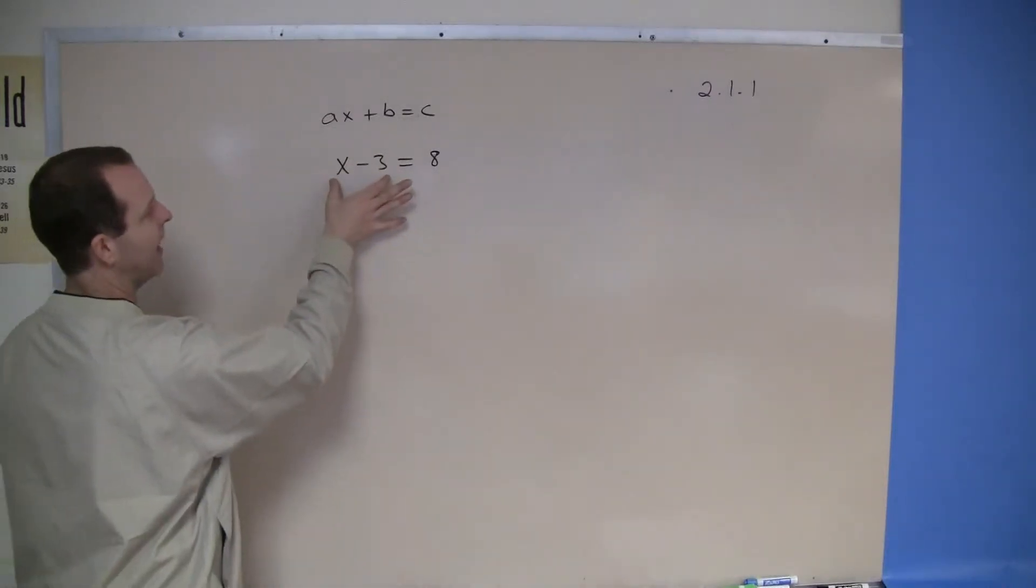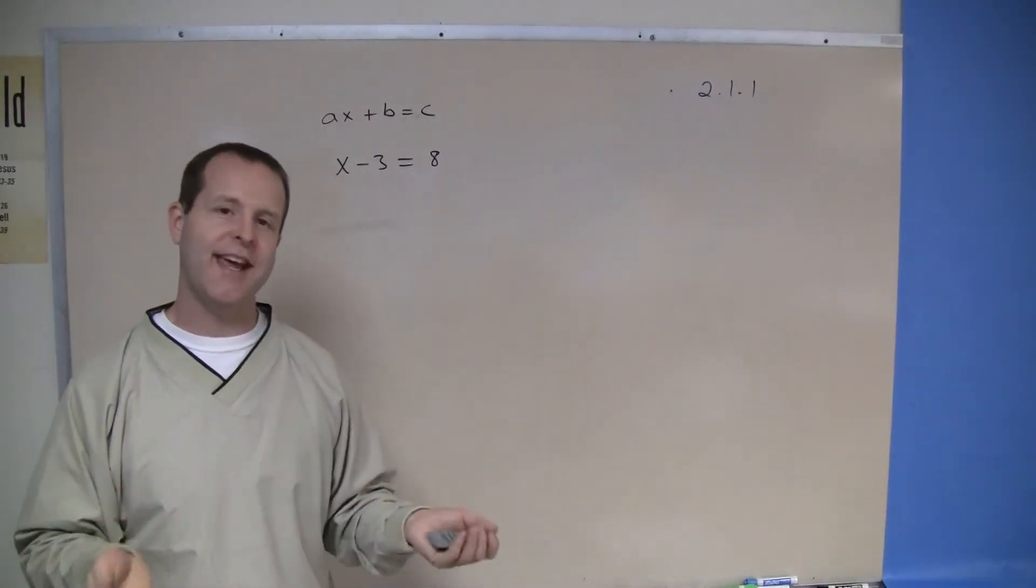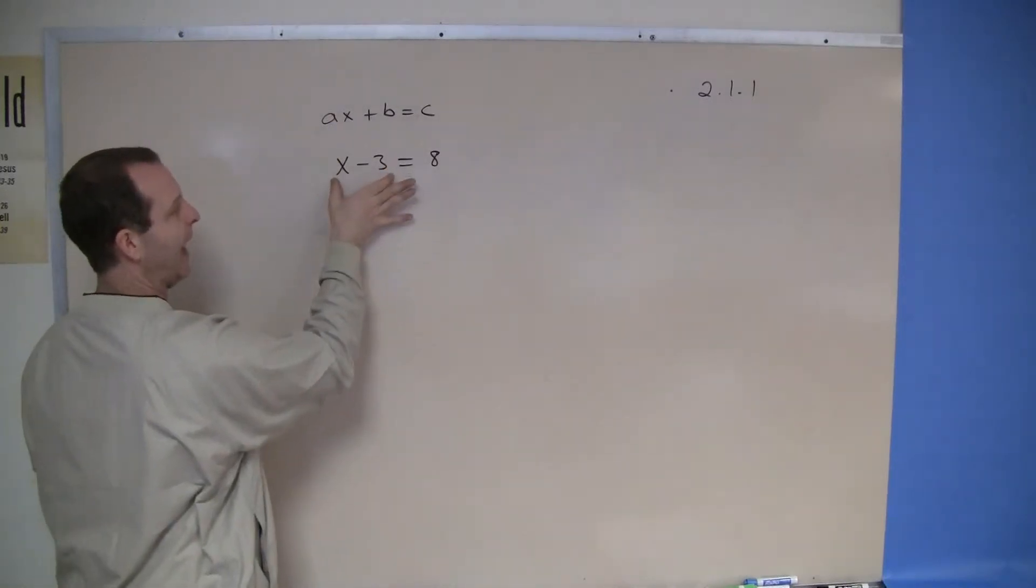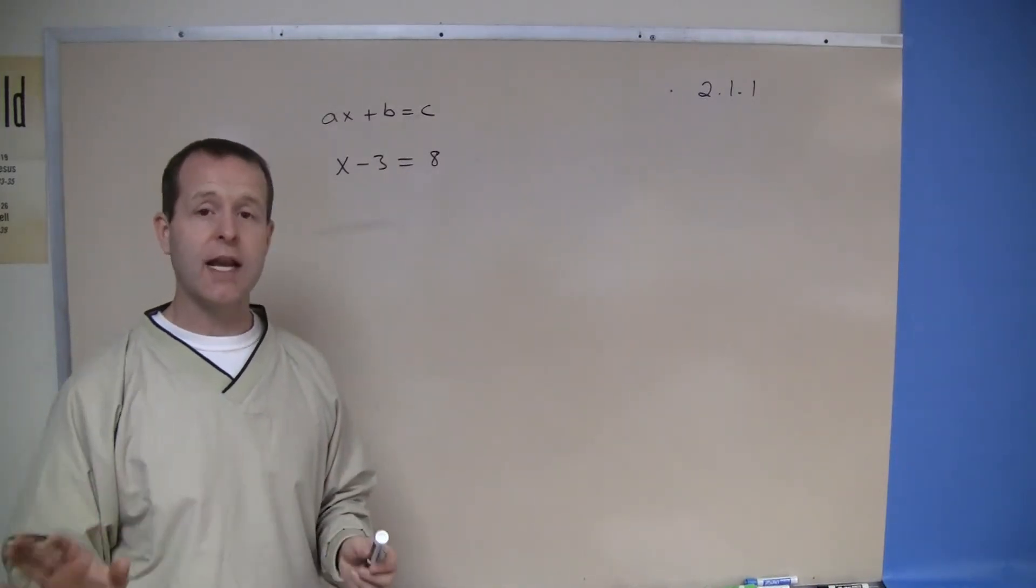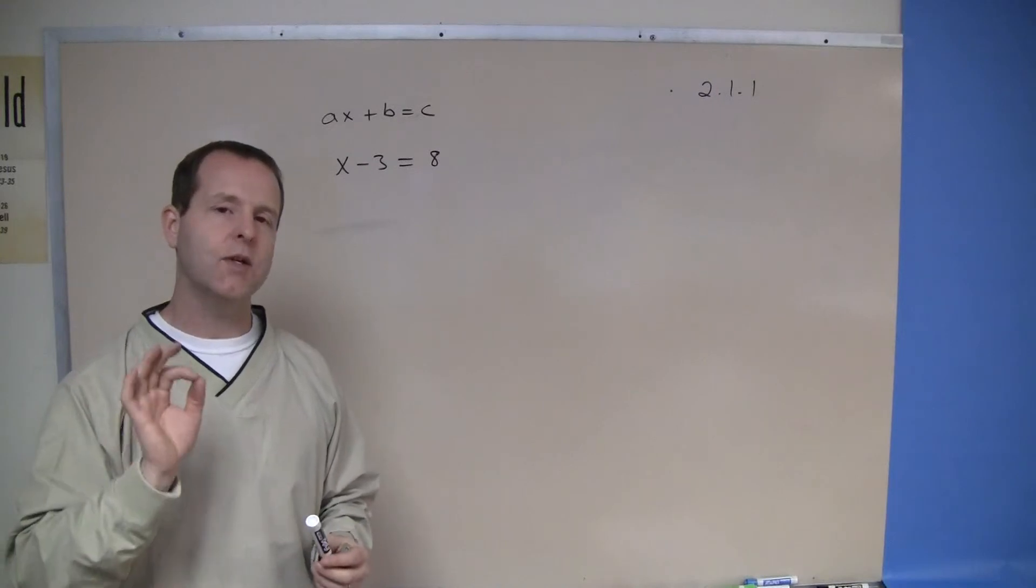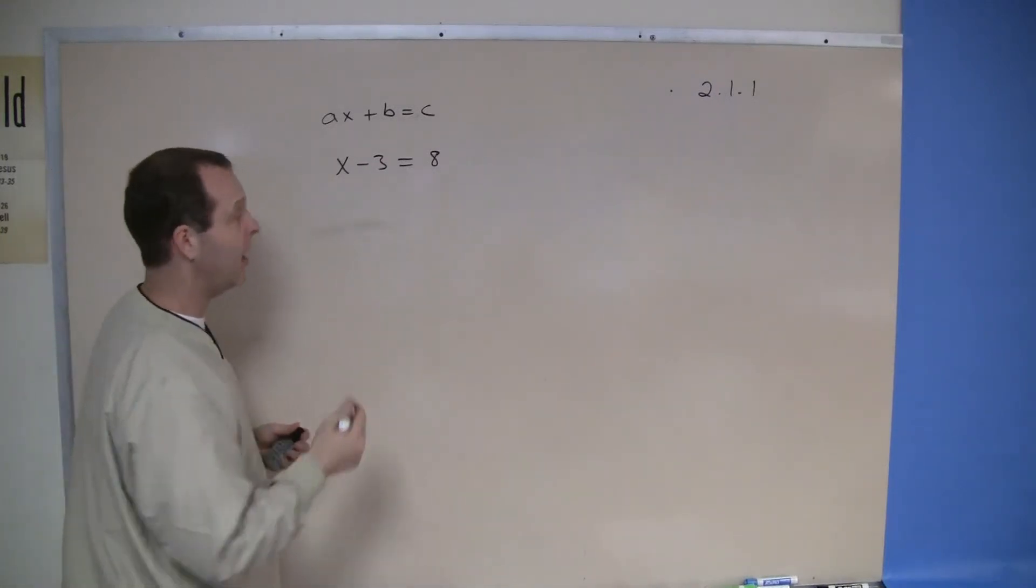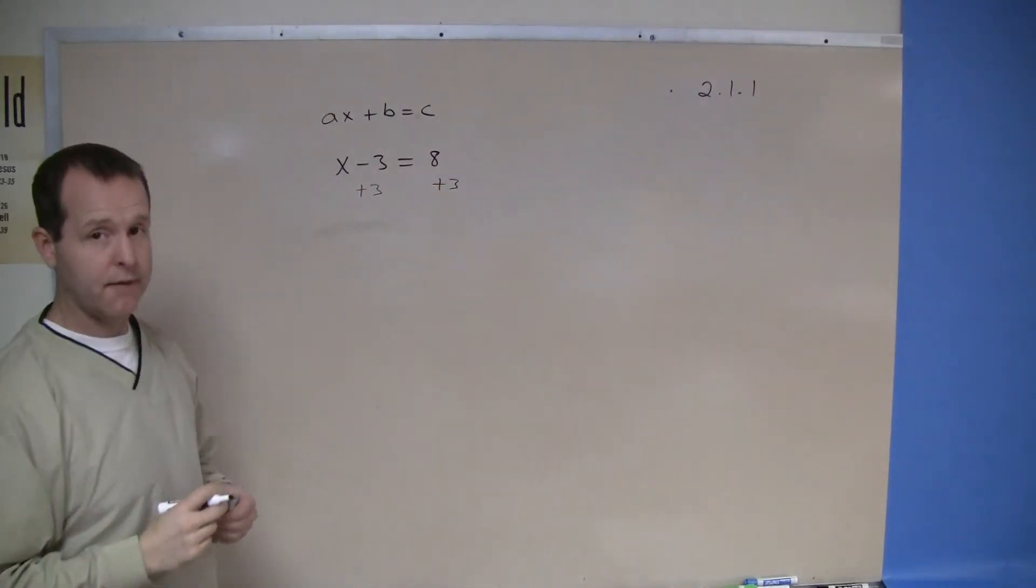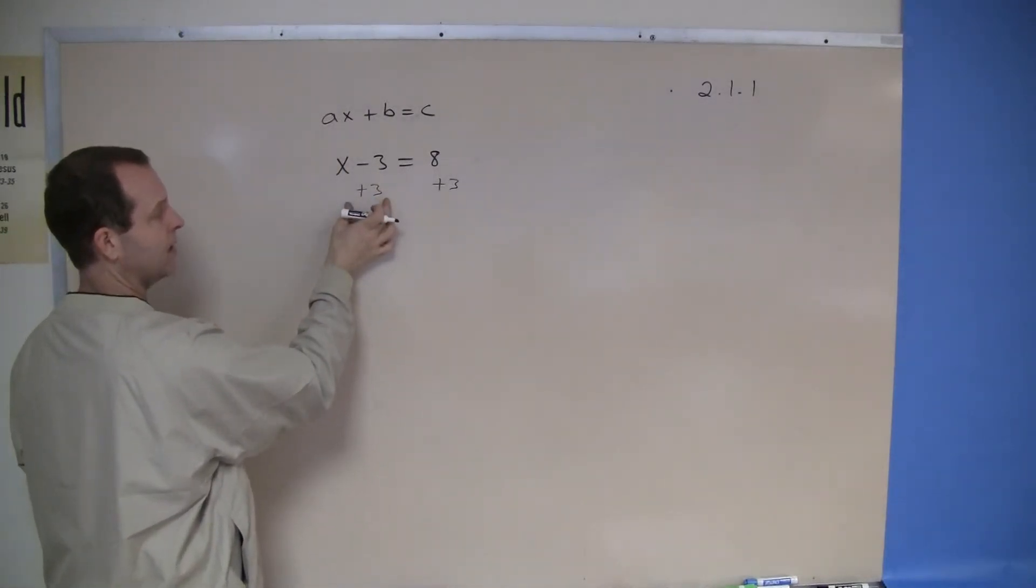What I see is I have X minus 3 on one side and 8 on the other side. I just want the X by itself. So I'm going to add a number to this side that will remove that negative 3. I can choose anything I want, as long as I do it to the other side. So I'm going to add a positive 3, and that's fine as long as I do it on the other side.